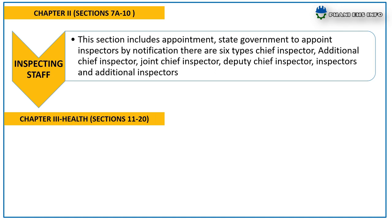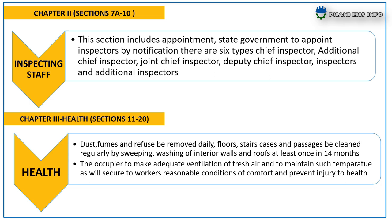Chapter 3, Health, covers sections 11 to 20. Key provisions include: removal of waste daily; floors, staircases and passages to be cleaned regularly by sweeping; washing of interior walls and roof at least once in 14 months; the occupier to make adequate ventilation of fresh air and to maintain temperatures that will secure reasonable conditions of comfort and prevent injuries to health.